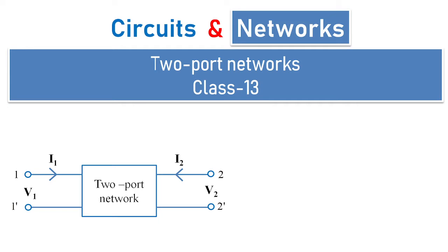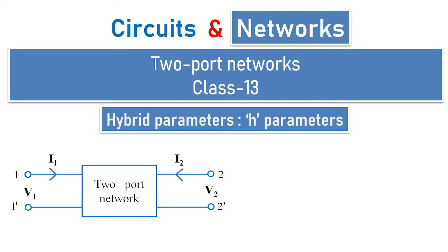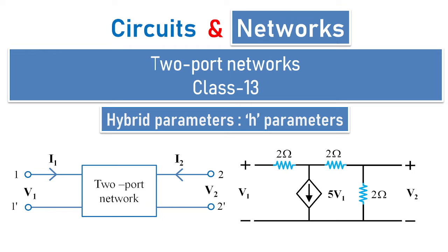Welcome to another session of circuits and networks. In today's two-port networks class 13, we are going to see hybrid parameters, especially the problem dealing with dependent sources. Here you can see phi·v1 can be written as a voltage-dependent current source. This is the problem given to us and we need to find out the hybrid parameters.